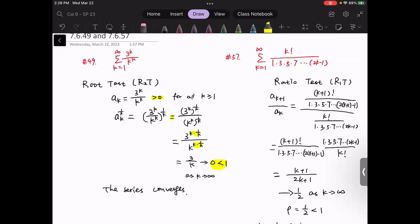Next, we will consider number 57. We clearly see factorial or factorial-like terms. Instead of the root test, it may be better to consider the ratio test.